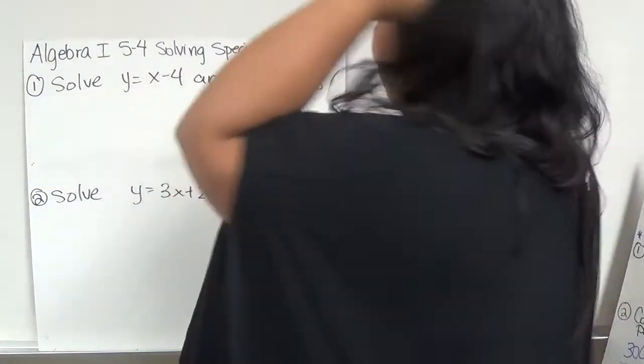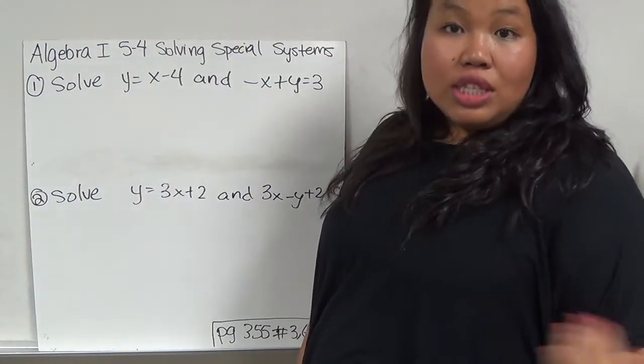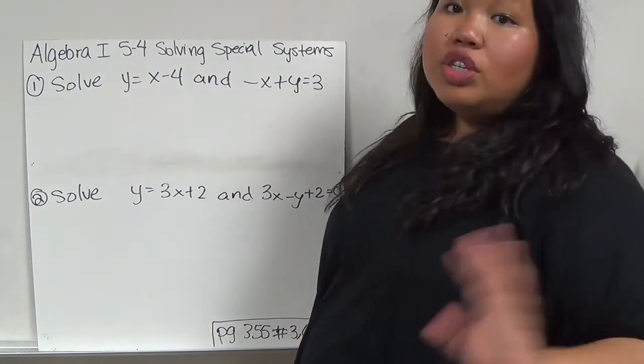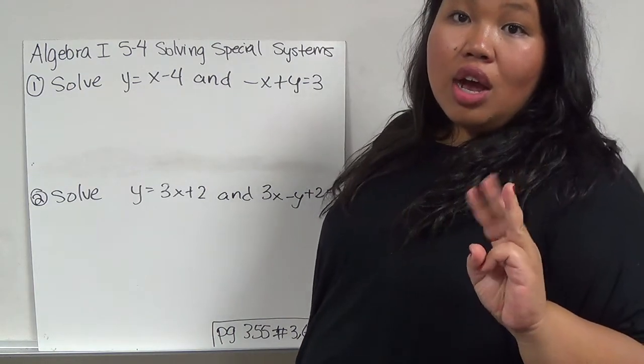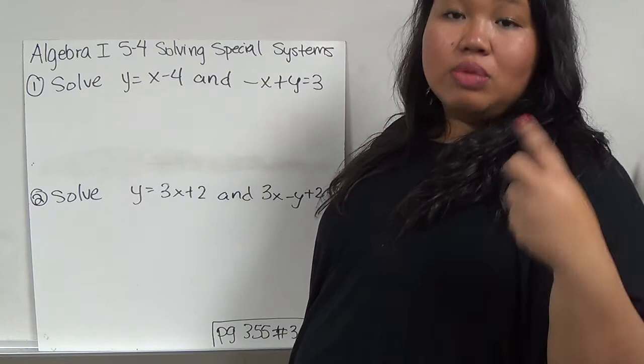In Algebra 1 Section 5-4, we're dealing with solving special systems. In this section, you can choose which of the three prior methods you want to use: graphing, substitution, or elimination.